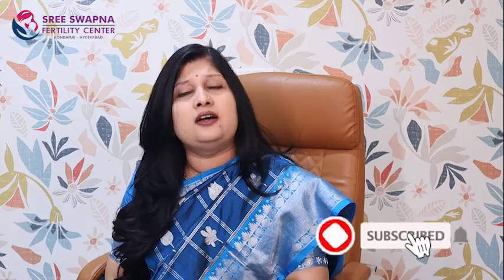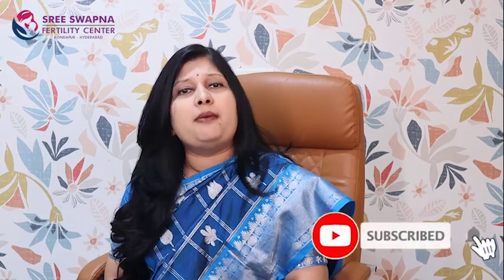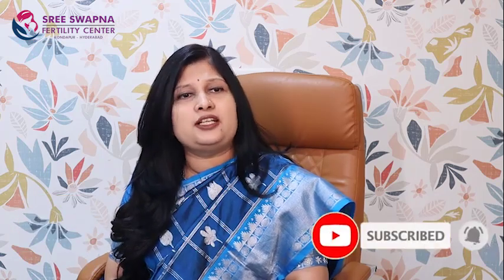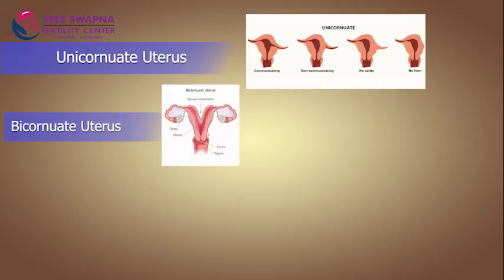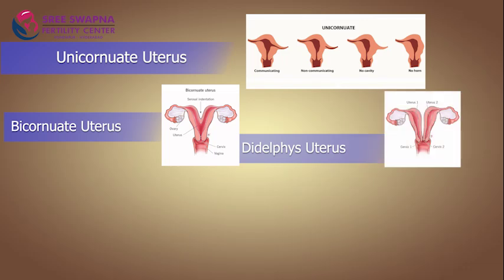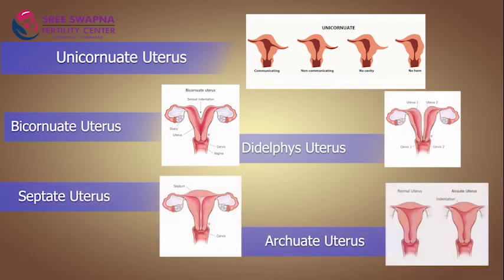These Mullerian abnormalities were classified earlier by the American Fertility Society classification in 2003 as Unicornuate, Bicornuate, Didelphys, Septate, and Arcuate uterus. But in 2013, a new classification was introduced.